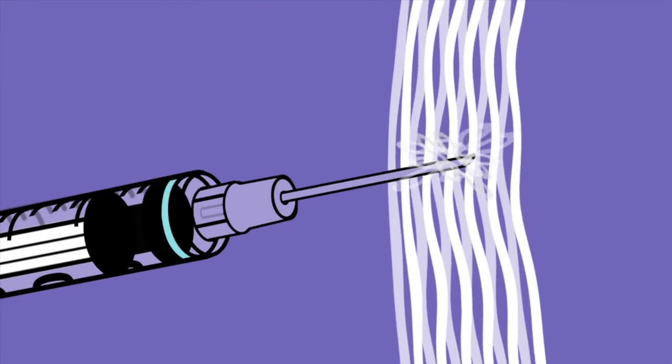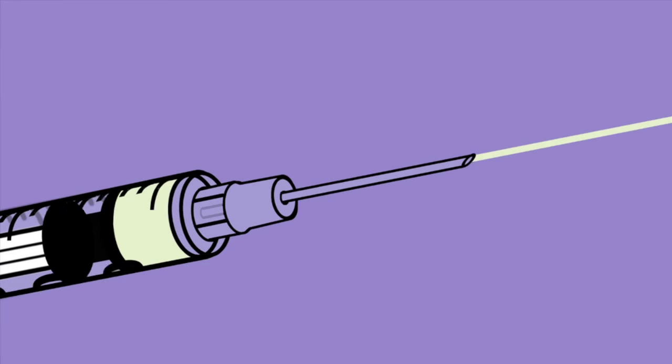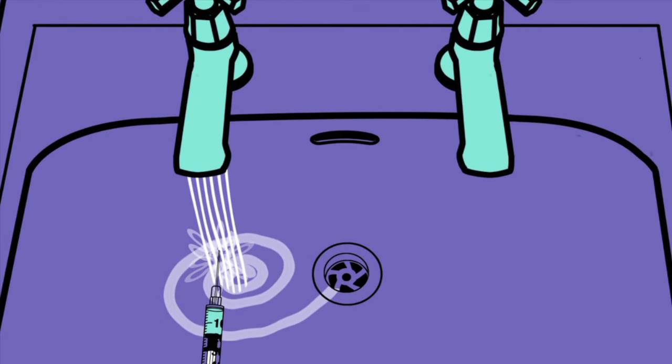While you're waiting, rinse and flush the syringe with cold running water. Then fill up the syringe with the bleach mixture from the mug. Squirt it down the sink. Rinse and flush your syringe with cold running water again.